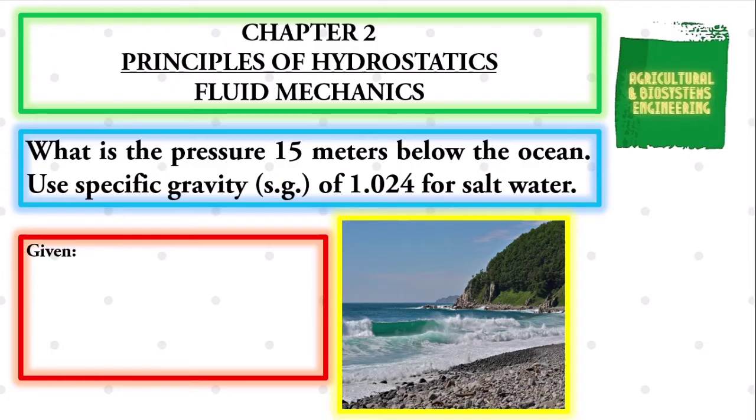To continue, we first identify our given. We have the height of the liquid, symbolized by letter H, to be 15 meters. The specific gravity of the salt water to be 1.024.